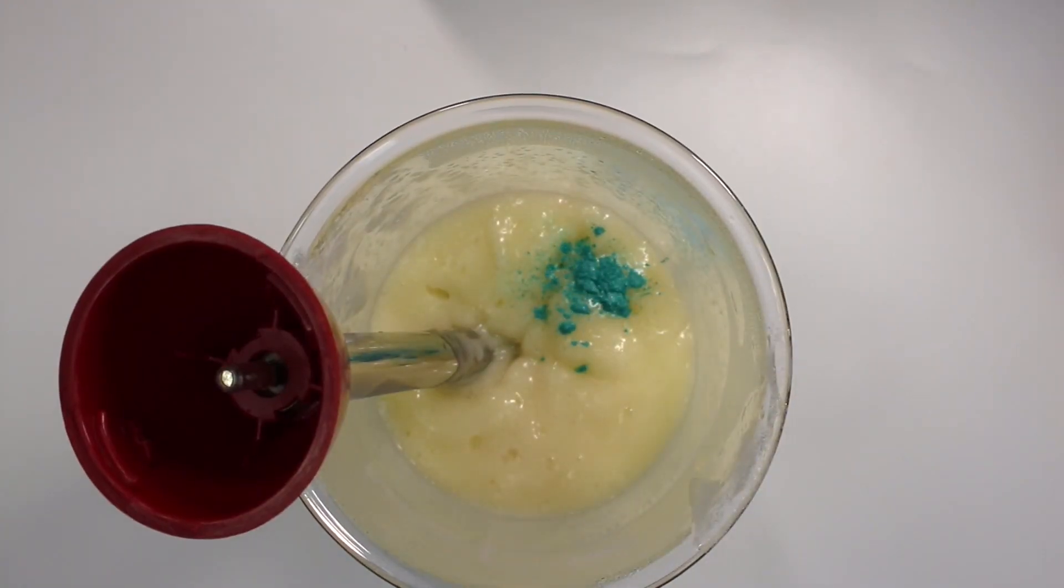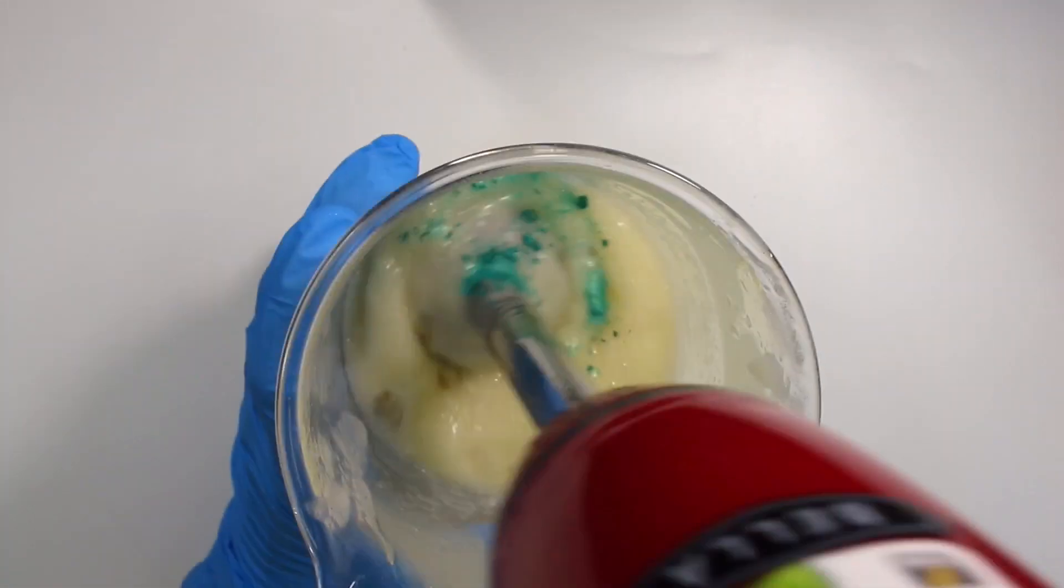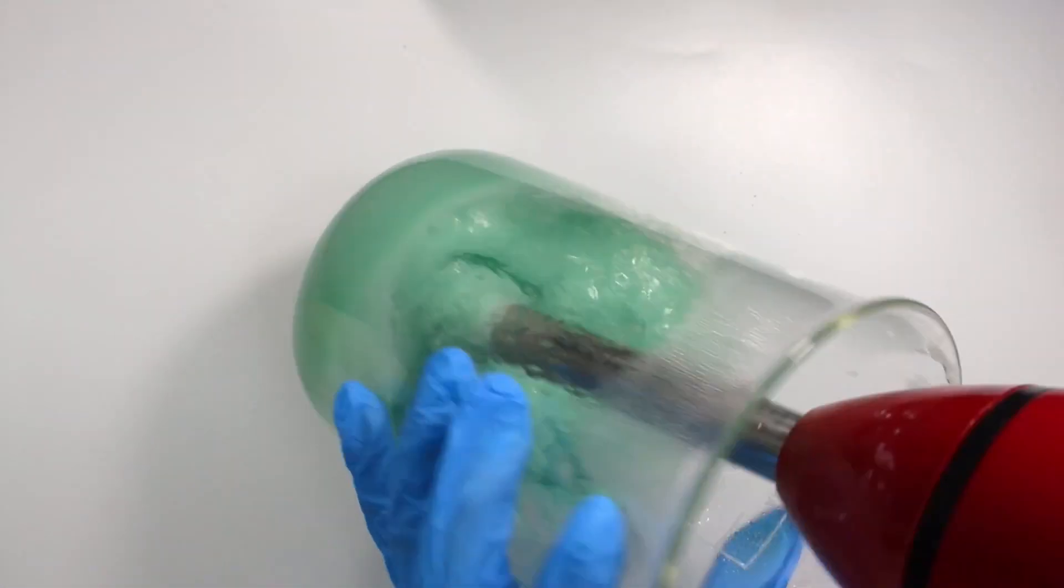And then this is when I go ahead and add in my mica powder to add some coloring to my facial cleanser. And you want to blend the mica powder in with the immersion blender as well to just break up the powder and the formulation.